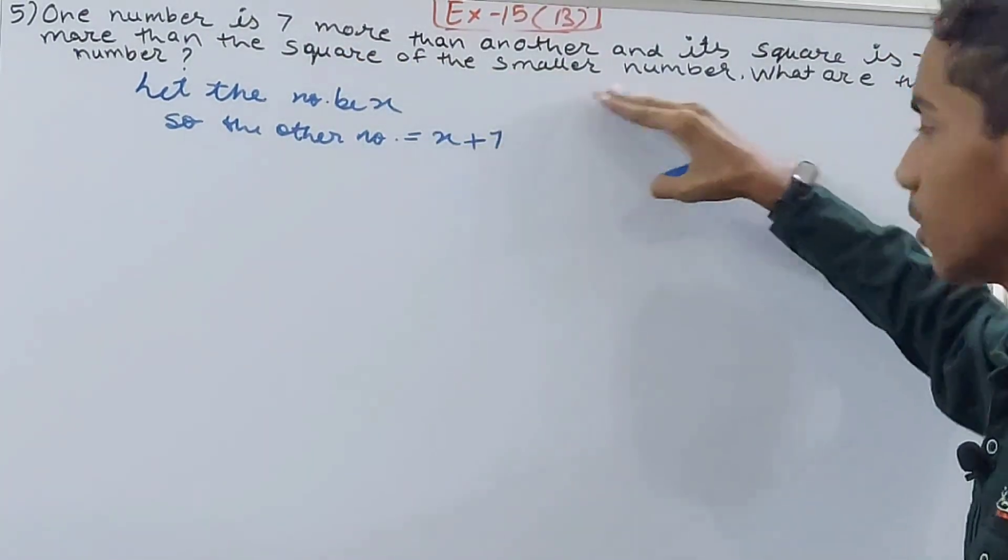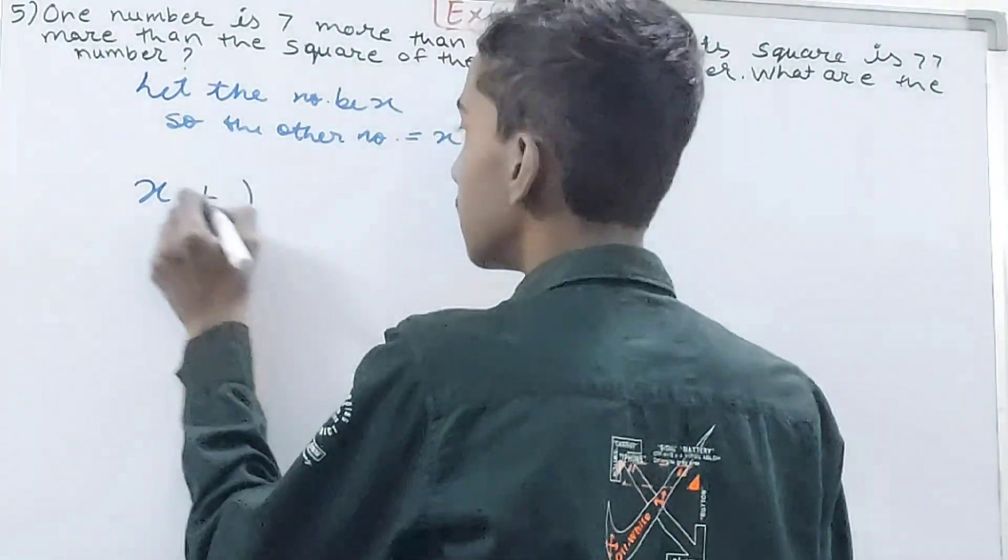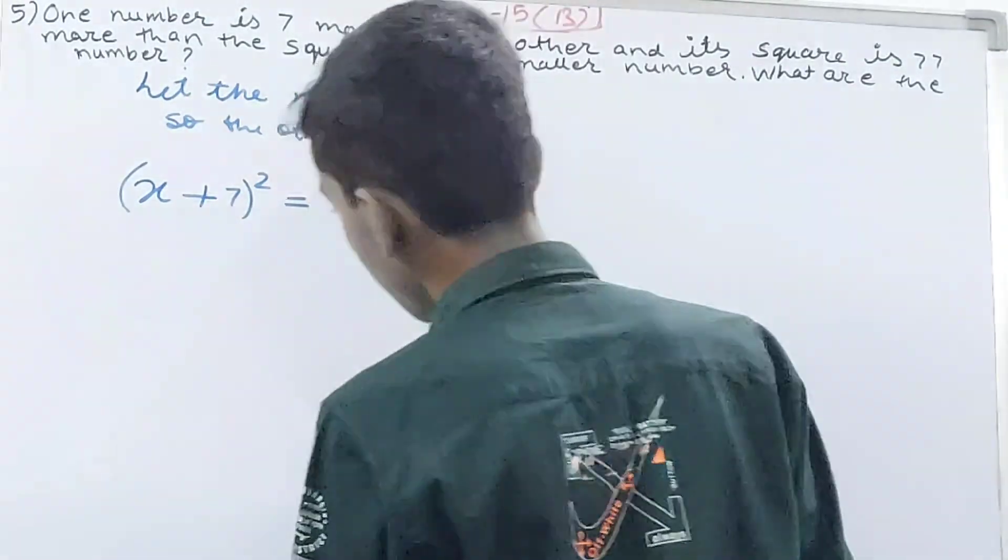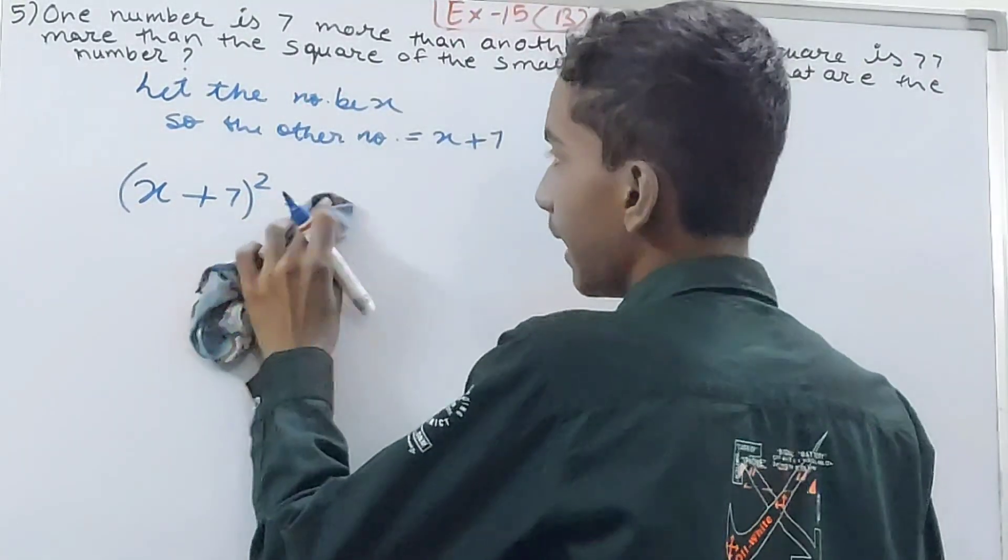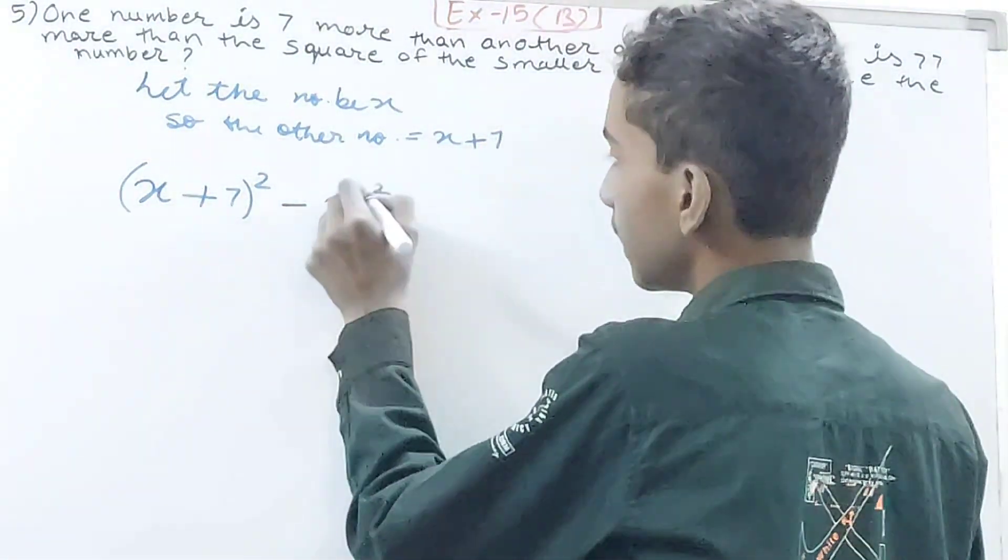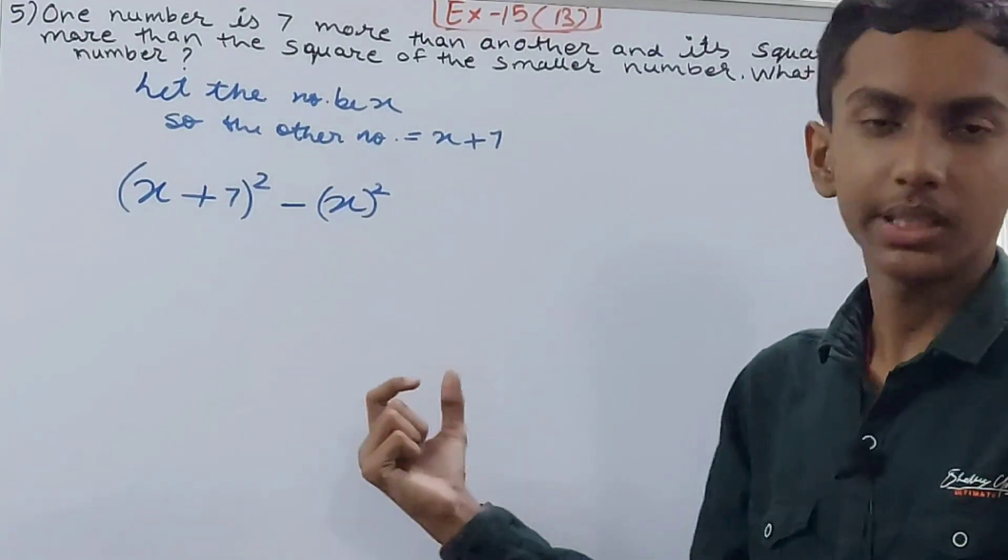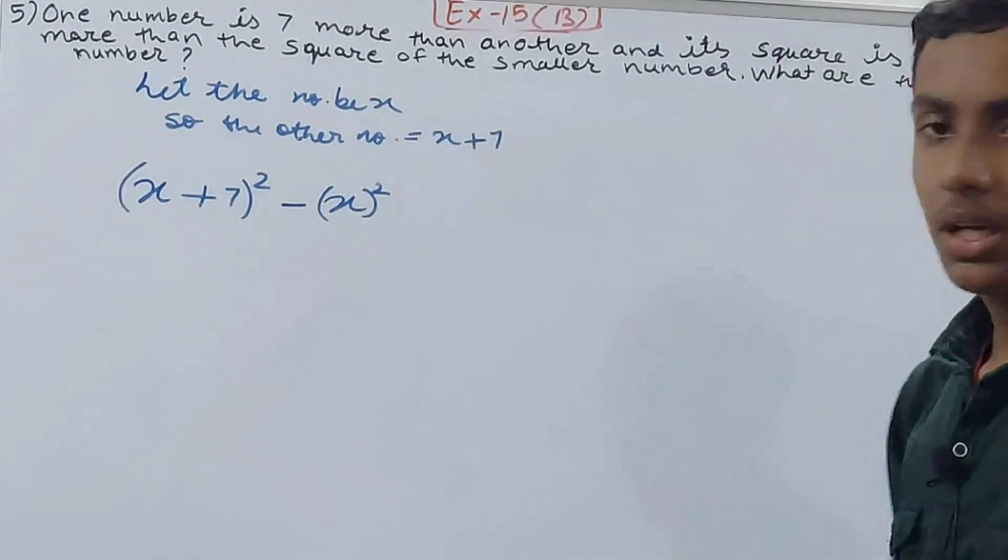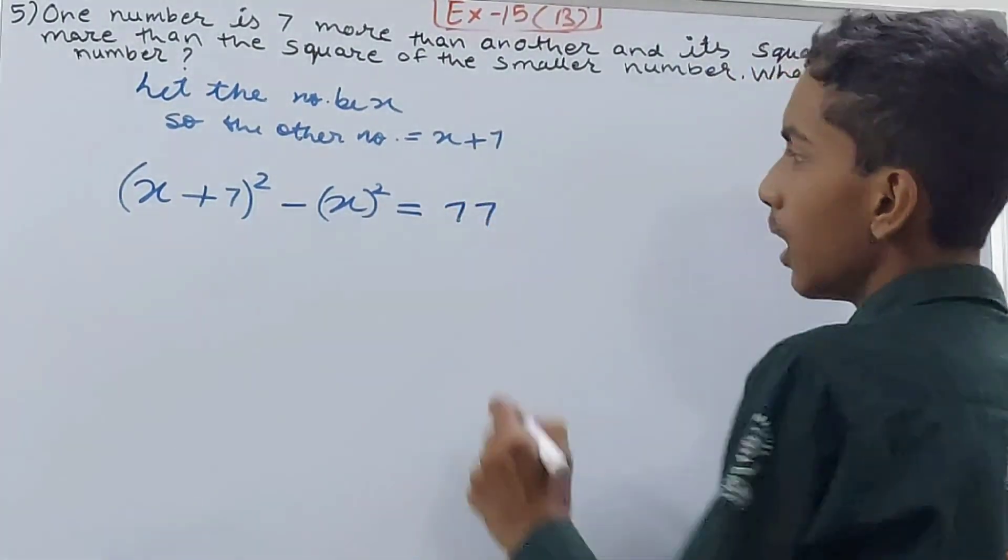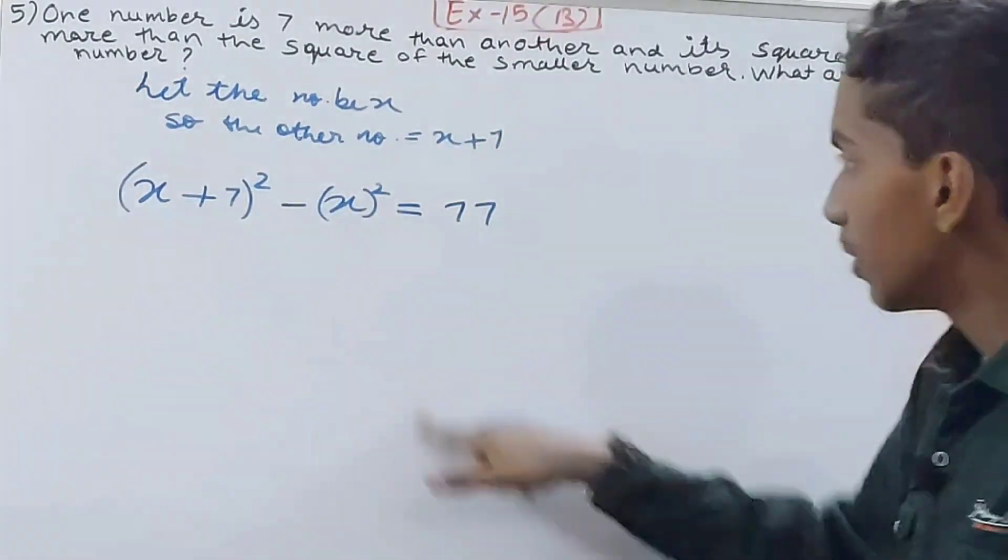So if I square the greater number, this will be (x+7)². If I subtract from this x², that is the square of the smaller number, the difference will be 77 because this square is 77 more than that square. So (x+7)² - x² = 77.